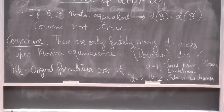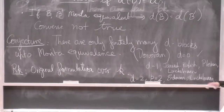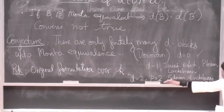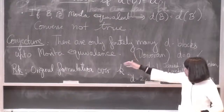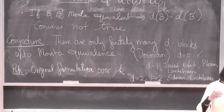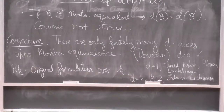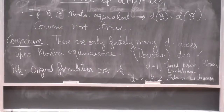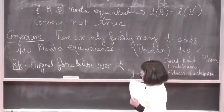I promised to do decomposition numbers. Instead of looking at the whole module category, you could focus on a particular invariant of the module category. We have our block B and the corresponding picture: the semisimple algebra over capital K and the algebra over the field of characteristic P.